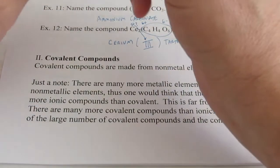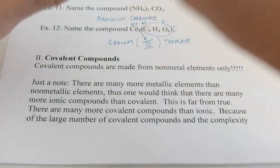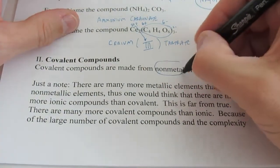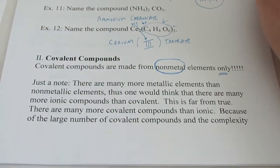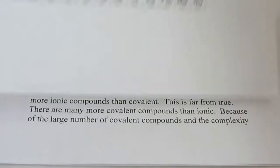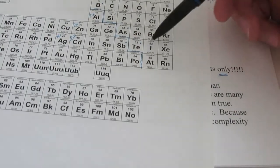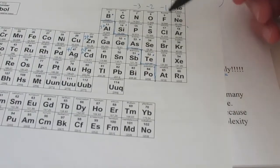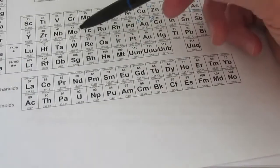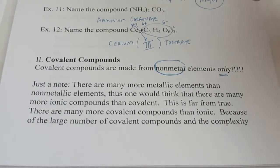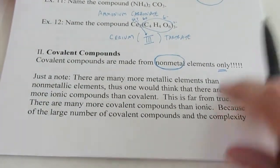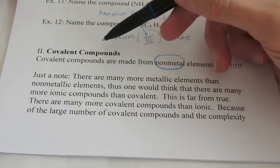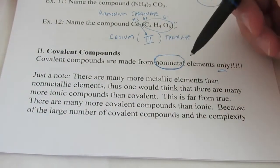Now covalent compounds are made from, here's the kicker, non-metal elements only. You with me on that? If it's non-metal bonded to non-metal, it is covalent. So these guys over here bonded to each other, non-metal to non-metal. It will not involve a metal, and it will not involve polyatomic ions. So keep that in mind. Covalent compounds are non-metal elements only.